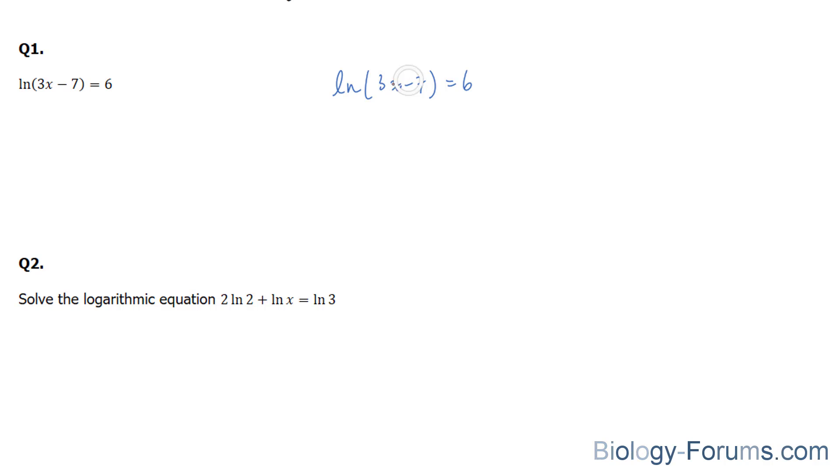To get rid of this ln and to liberate what's inside here, you need to raise both the left and the right side to the base of e. By doing that, this e and this ln cancel each other out. And so we're left with 3x - 7 is equal to e to the power of 6. The reason why this is special is now we can isolate for x. We've liberated the x from the brackets.